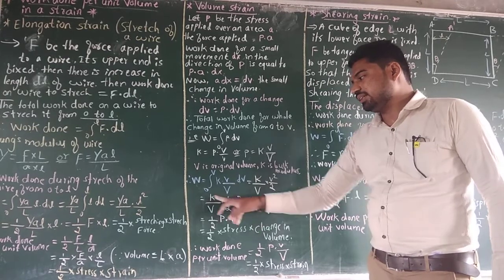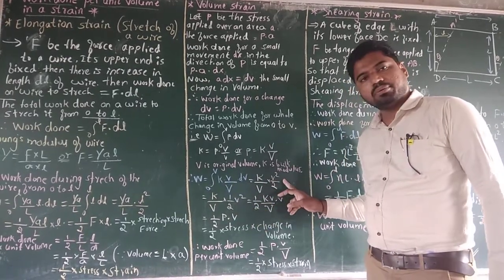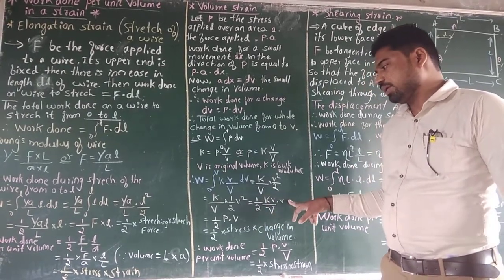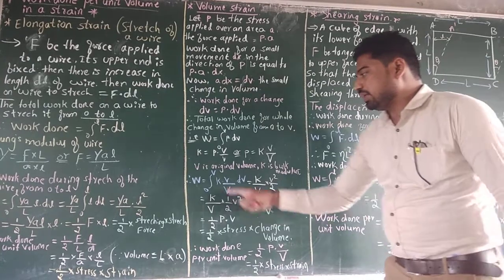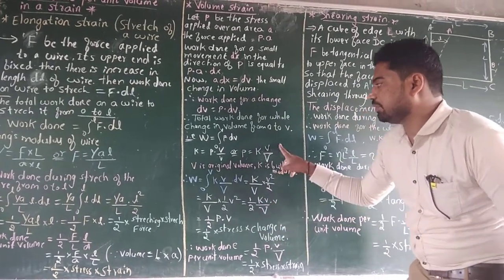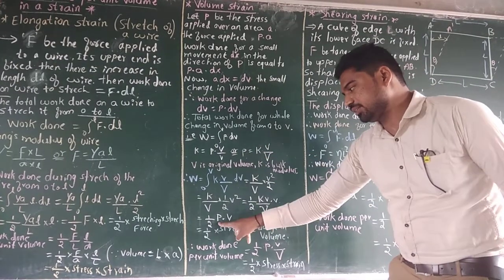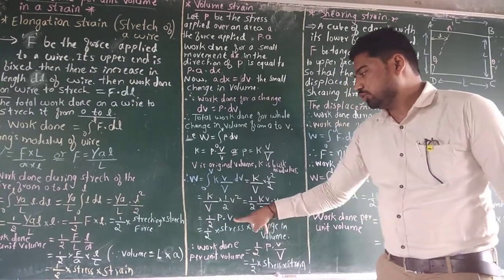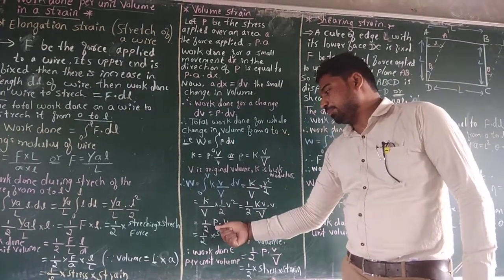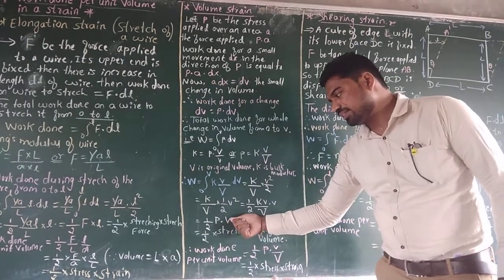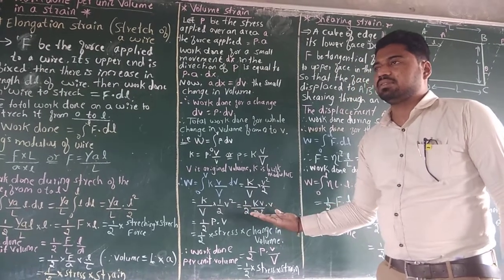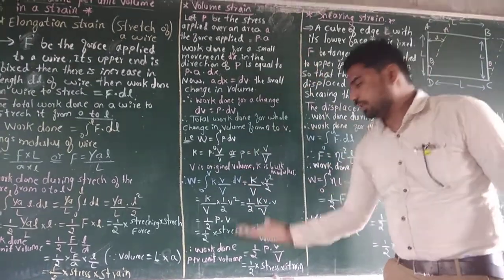Therefore W equals (K/V)·(1/2)·V squared, which equals (1/2)·K·V²/capital V. Writing V squared as V into V: W equals (1/2)·(K·small V / capital V)·V. Since K·small V / capital V equals P, we get W equals (1/2)·P·small V, where P is stress and small V is the change in volume.